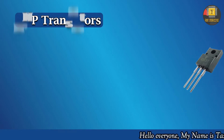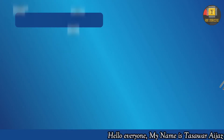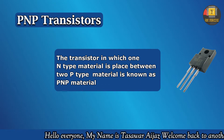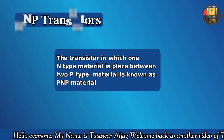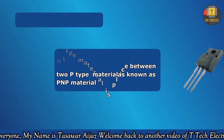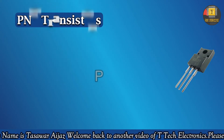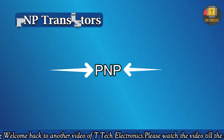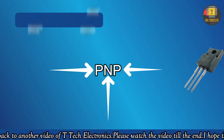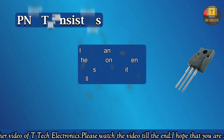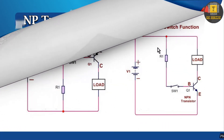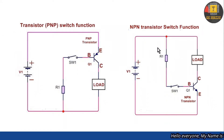First let's see the definition of PNP transistor: a transistor in which one N-type material is placed between two P-type materials is known as a PNP transistor, as you can see in the name P-N-P.